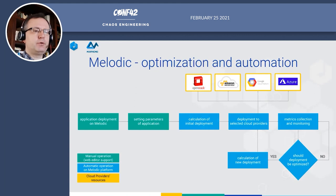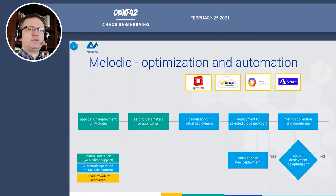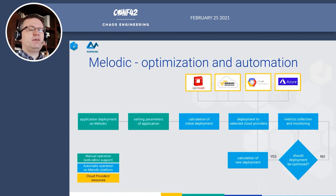Melodic uses very advanced optimization algorithms: constraint programming optimization, genetic optimization, and Monte Carlo tree search with a neural network, similar to how AlphaGo works for solving the optimization problem. The results of the optimizations are really, really good.